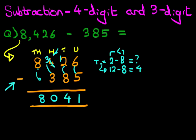8,426 minus 385 is 8,041. 8,041. That is correct.